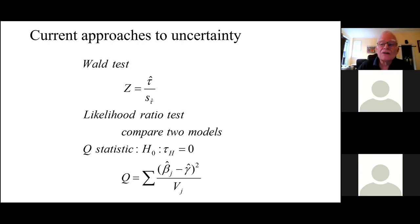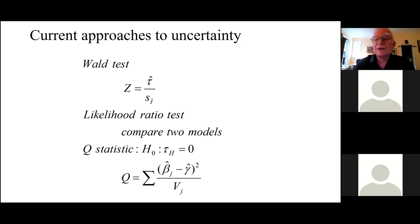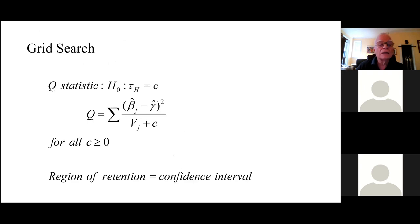Summary of current methods: we've got a Wald test that assumes a symmetric sampling distribution, which doesn't necessarily work well. We've got a likelihood ratio test that doesn't work well at the boundary of zero and doesn't give you a confidence interval. And we've got a Q statistic that still only answers the question about the null hypothesis but doesn't give us a confidence interval. If you're doing Bayesian analysis and working with a posterior distribution, we can talk about that — but that's kind of where we are.